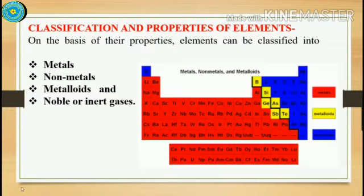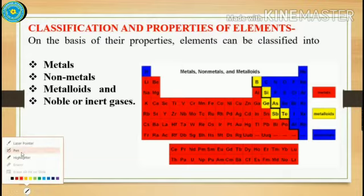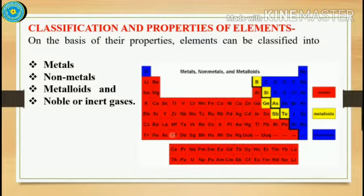In the last class, we learned about properties and classification of elements and we learned about the periodic classification into metals, non-metals, metalloids, and noble or inert gases.